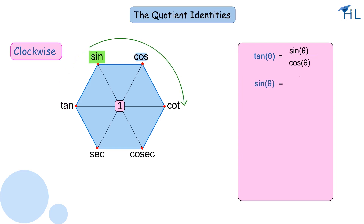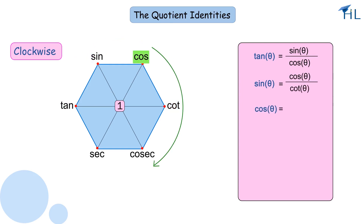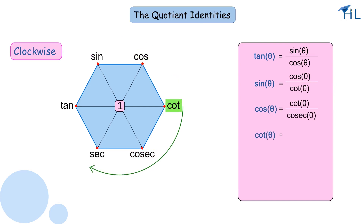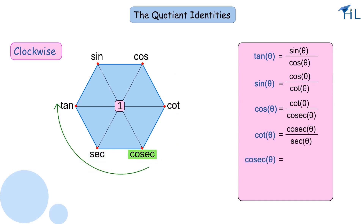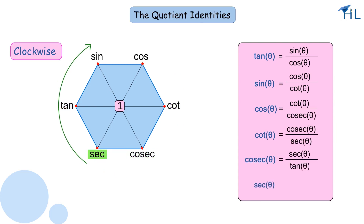Continuing clockwise: sin θ = cos θ / cot θ, cos θ = cot θ / cosec θ, cosec θ = tan θ / sin θ.